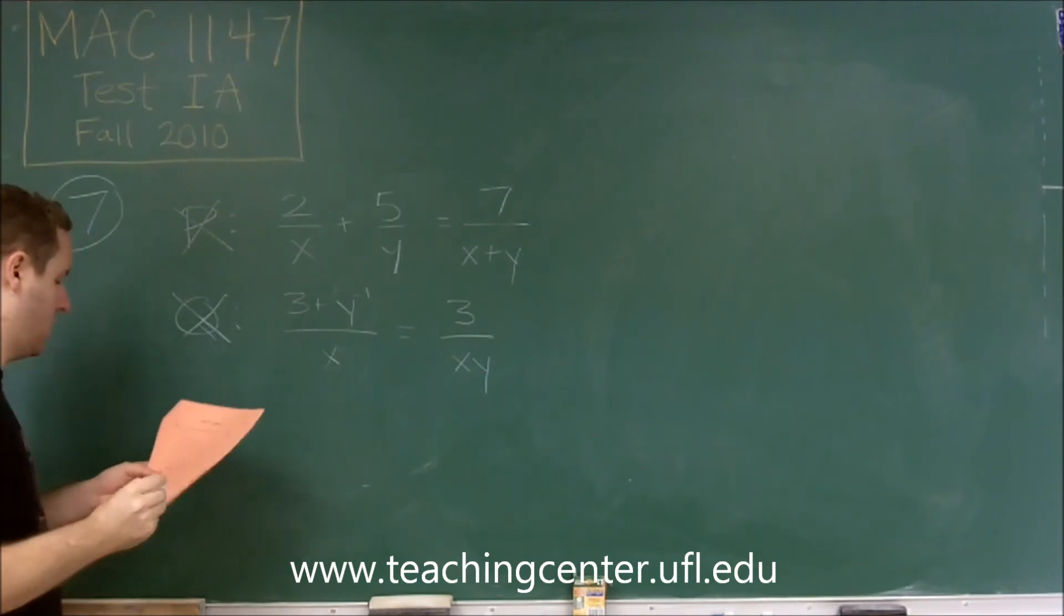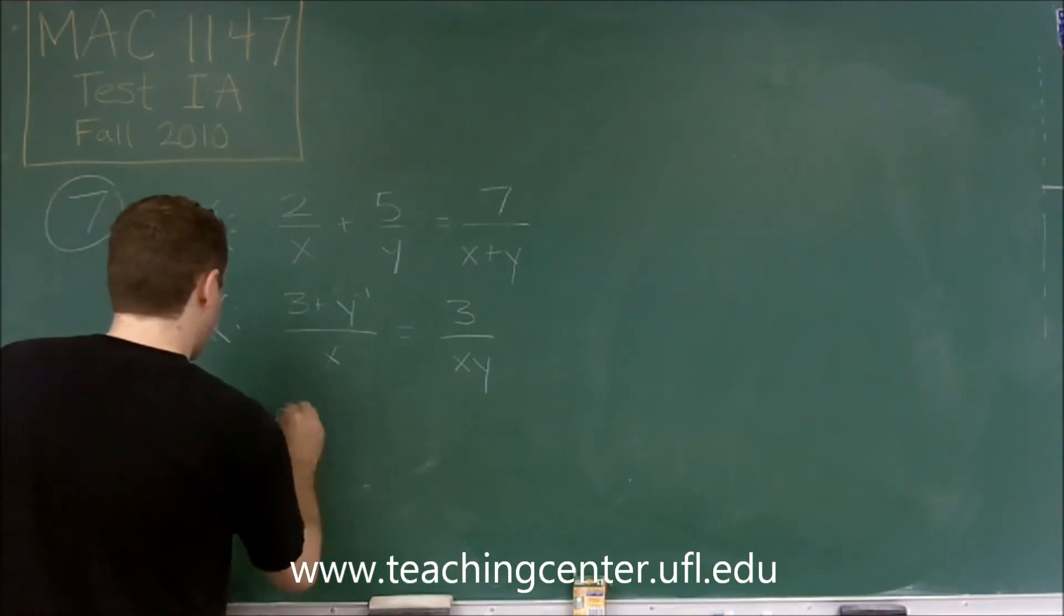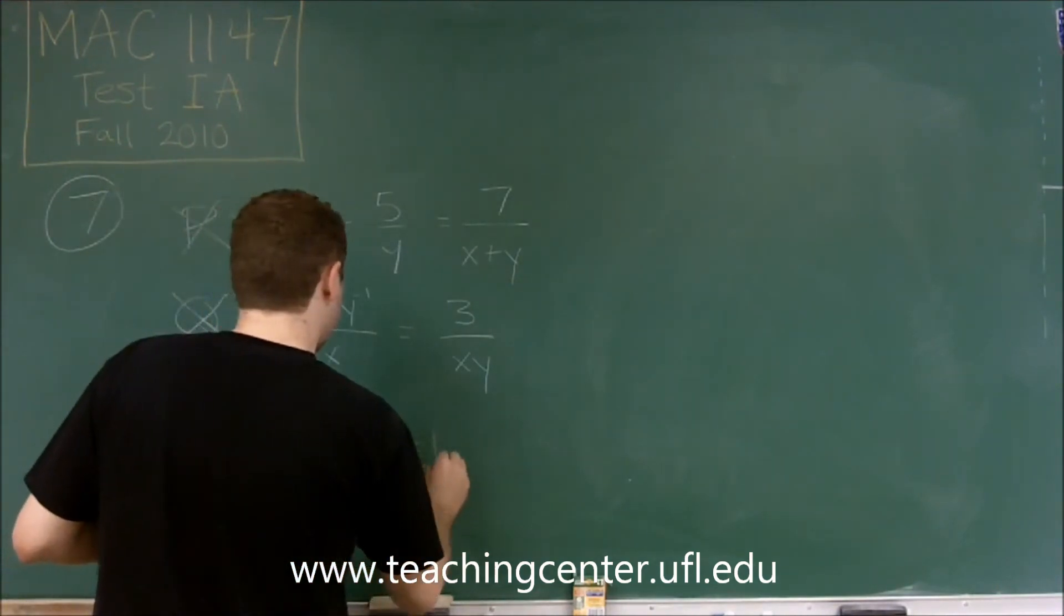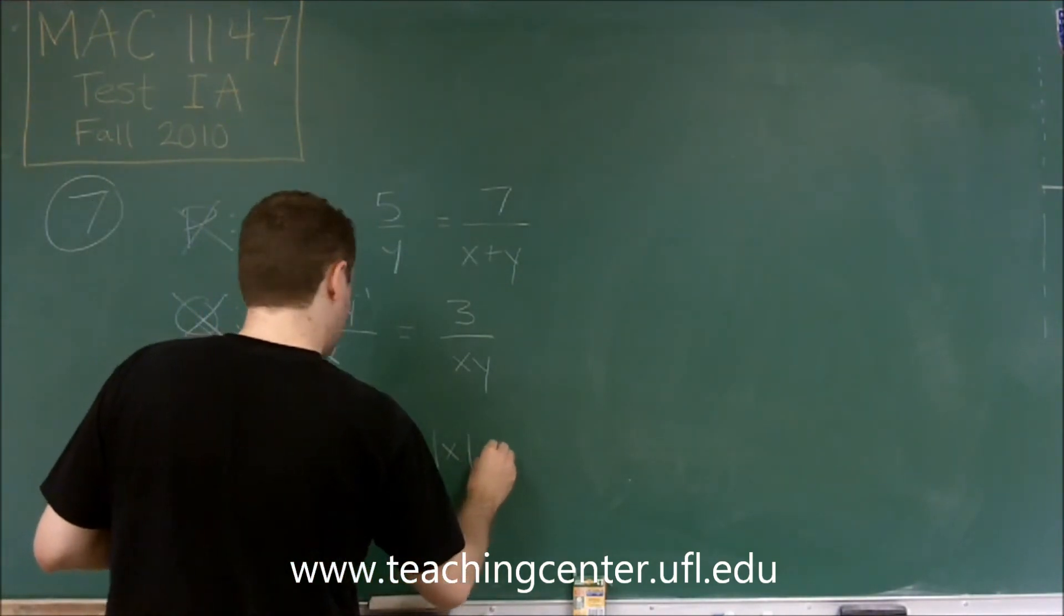And finally, letter R. You get a square root of x squared plus y squared is equal to absolute value of x plus absolute value of y.